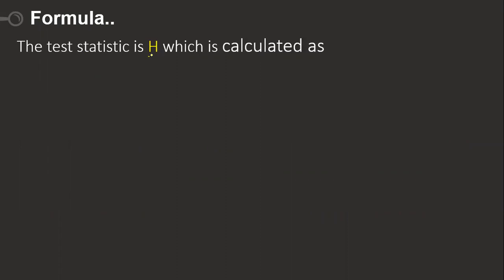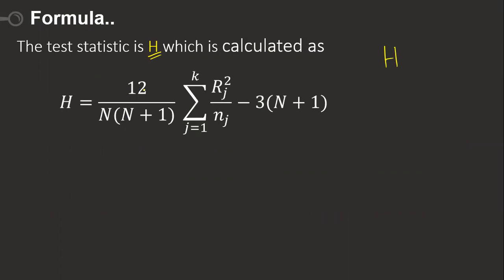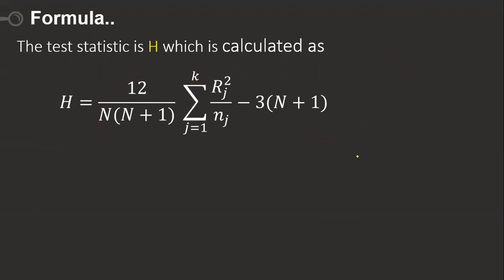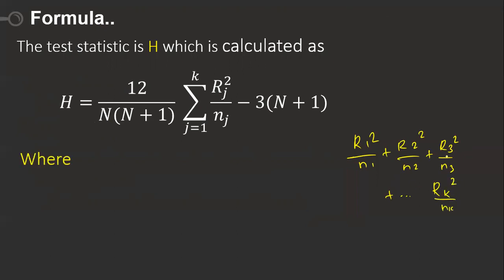Now we have a formula for this. The test statistic is called H. It is denoted by the letter H, calculated as: H equals 12 divided by N(N+1), multiplied by the sum from j=1 to k of (Rj squared divided by nj), minus 3(N+1). According to different books, different notations are used, but the meaning is R1 squared over n1, plus R2 squared over n2, plus R3 squared over n3, and so on up to Rk squared over nk.